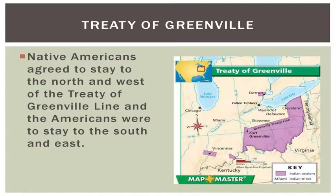Washington's next domestic challenge proved much more divisive. Small farmers along the western frontier in states like Pennsylvania had long been used to distilling their surplus rye, barley, wheat, corn, and fermented grain mixtures to make whiskey. In some places, whiskey even served as an accepted form of currency. Many of these whiskey-producing farmers were Revolutionary War veterans who did not take kindly to a new tax on distilled liquors passed by the federal government as part of Alexander Hamilton's Assumption Plan in 1791.